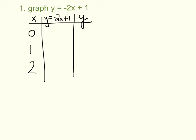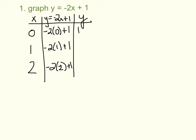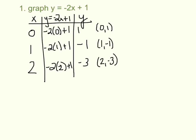Plug in 0: y equals negative 2 times 0 plus 1. Plug in 1: negative 2 times 1 plus 1. Plug in 2: negative 2 times 2 plus 1. Negative 2 times 0 is 0, plus 1 gives me 1. Negative 2 times 1 is negative 2, plus 1 is negative 1. Negative 2 times 2 is negative 4, plus 1 is negative 3. So my three points are (0, 1), (1, -1), and (2, -3).